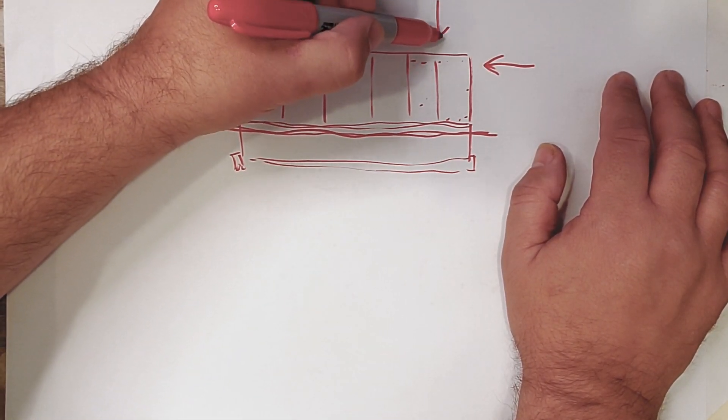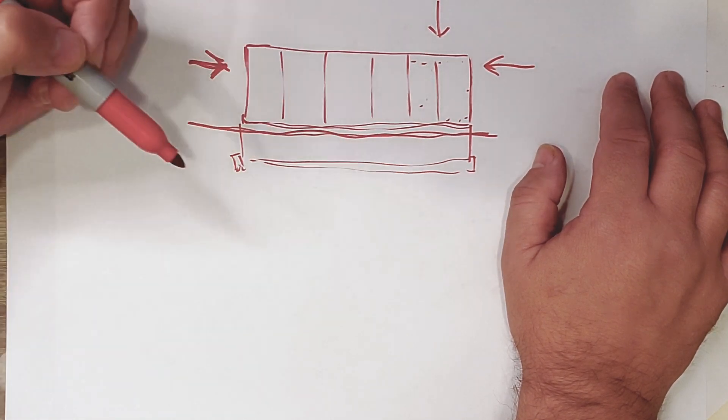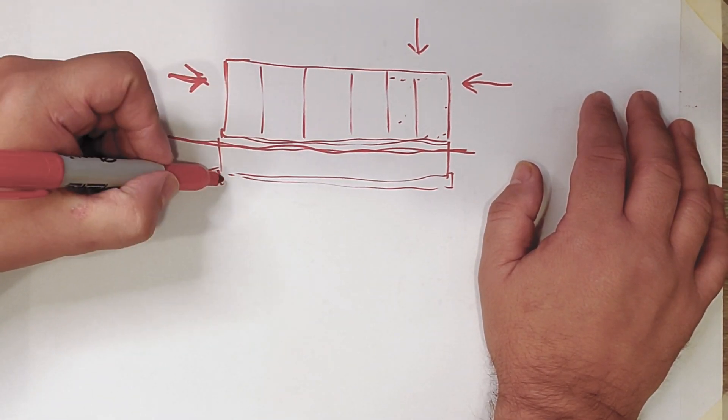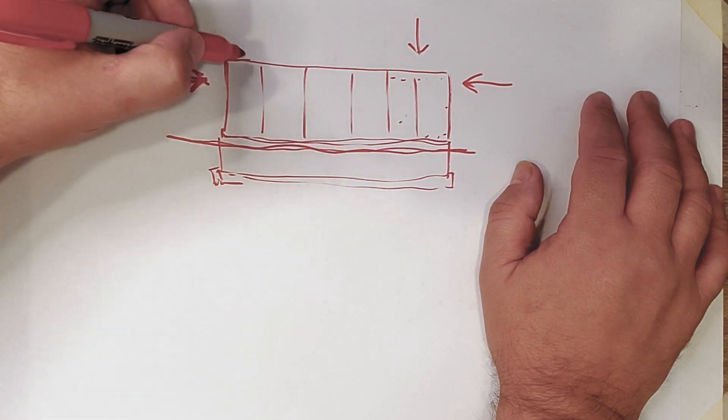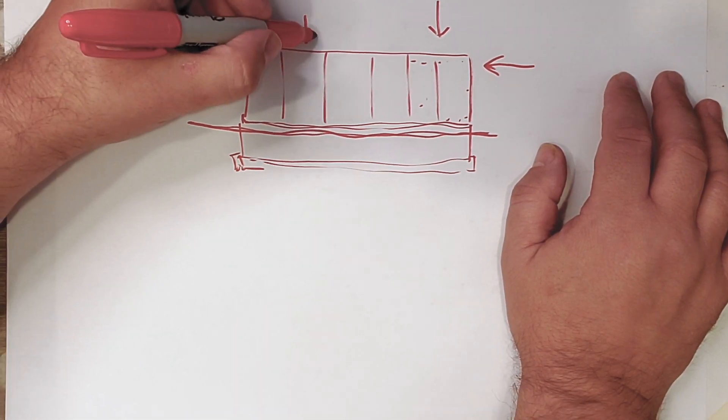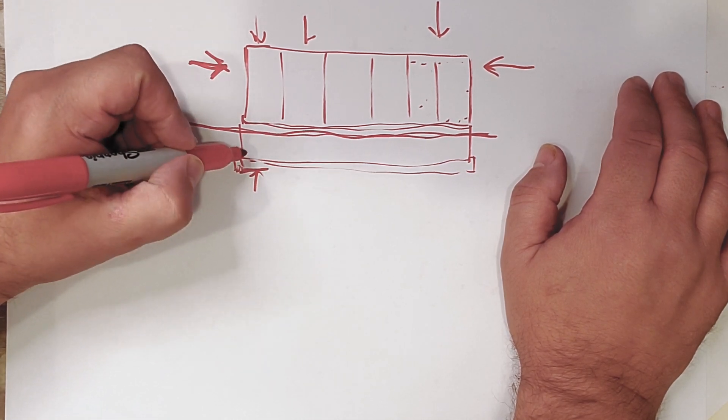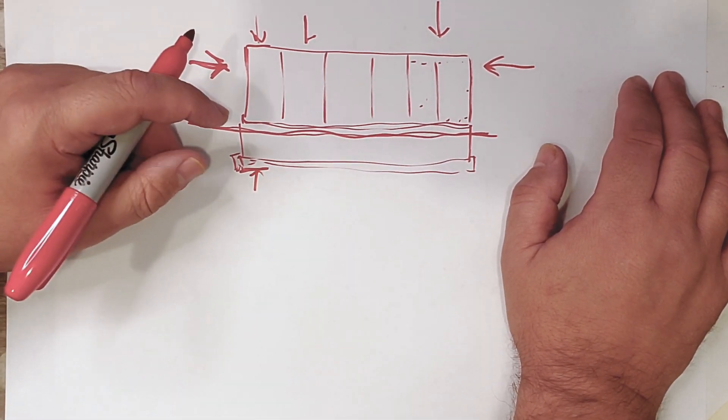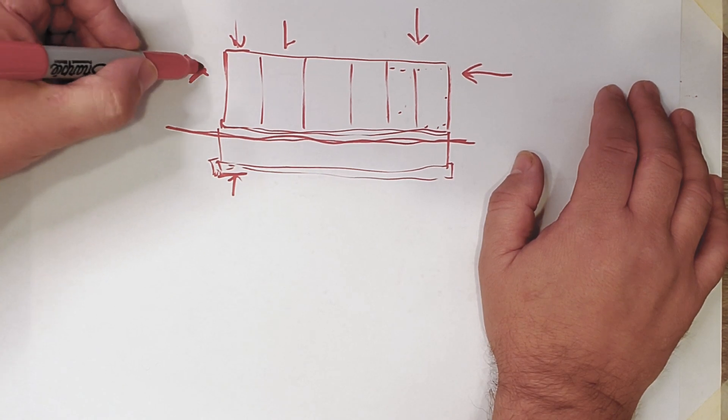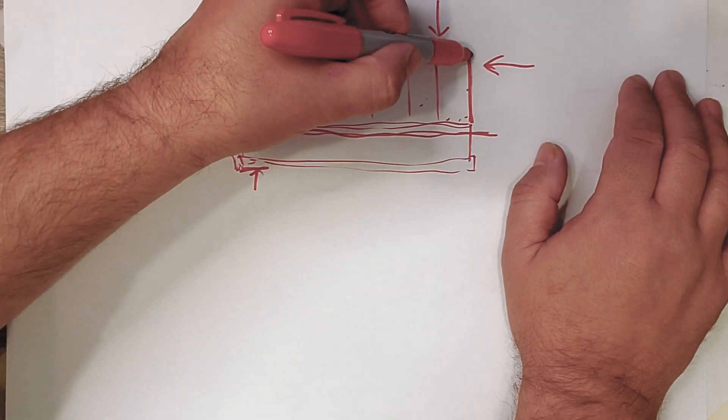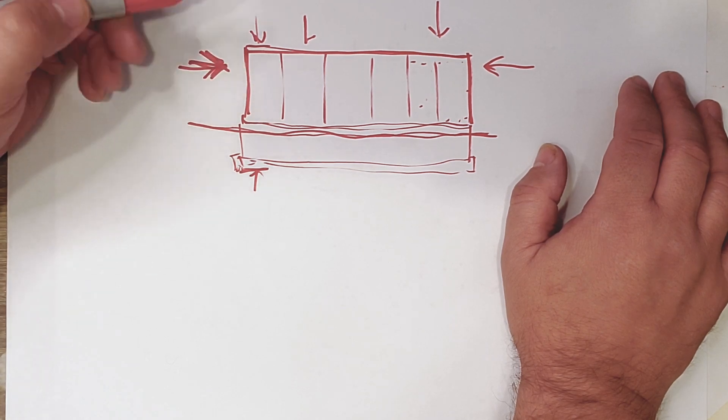As opposed to a gravity load, which is one of the ones we're very easily solved for—building applies a certain load of gravity, we provide a resisting force at the foundation, building stands up. But what happens when the building gets that load laterally? The building wants to deform.